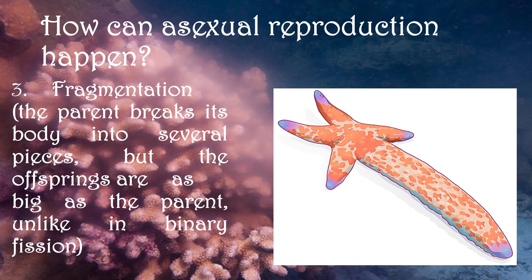Another means of asexual reproduction is fragmentation. In fragmentation, the parent breaks itself into several pieces, but the offsprings are as big as the parent, unlike in binary fission. Examples of animals that undergo fragmentation are starfish or sea stars and planaria.